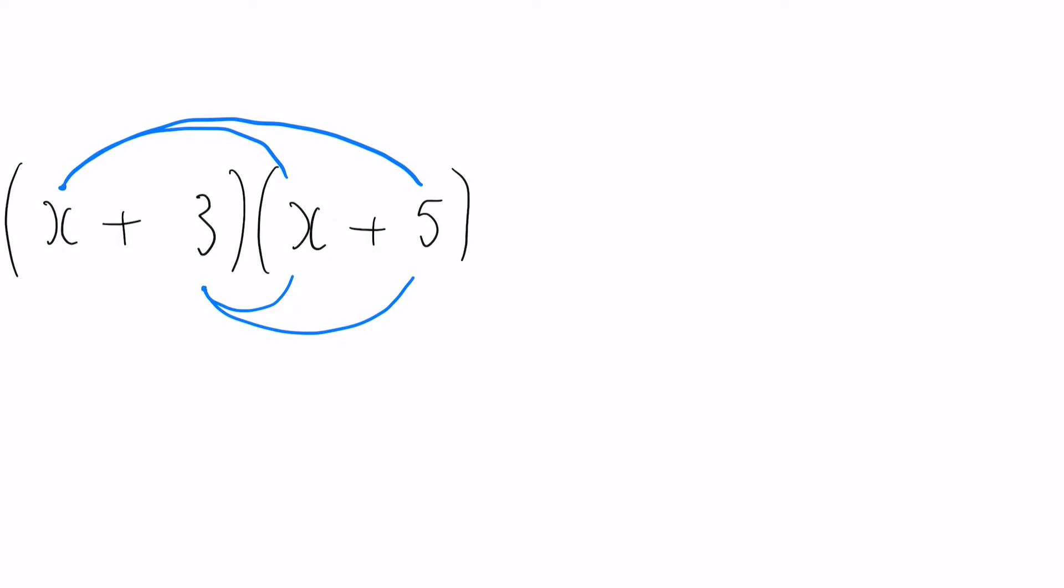First of all, this first claw here: X multiplied by X. We've learned this in the simplifying algebra video. When we have two X's that we're multiplying together, this becomes X squared. So that is the first part done.